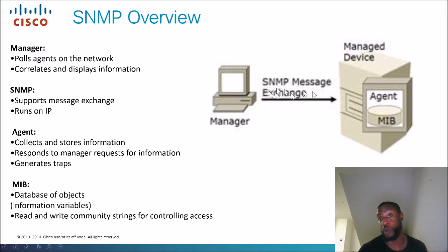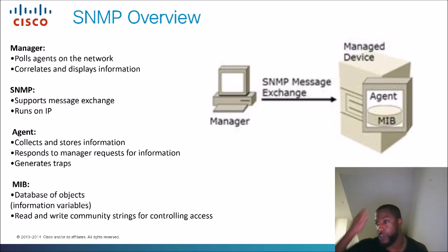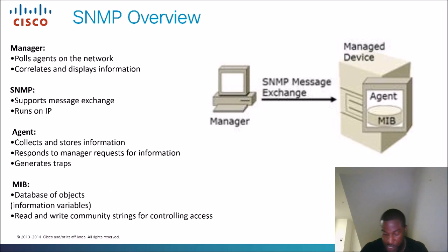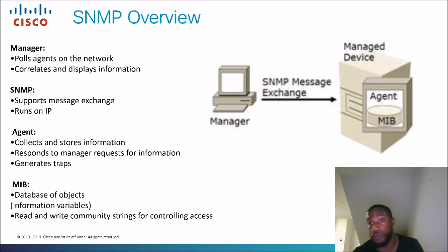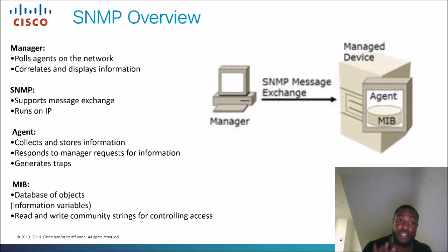The agent also generates traps. Traps capture information — if somebody just unplugged a cable, it's going to generate a trap: I just realized somebody unplugged the cable. The agent will then let the manager know: I got an SNMP trap, somebody just unplugged the cable. That's what a trap is.